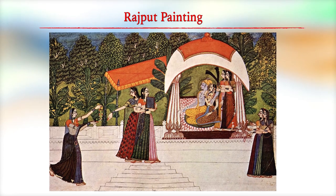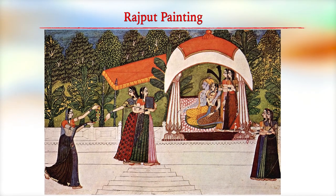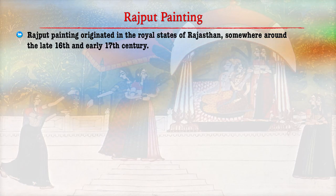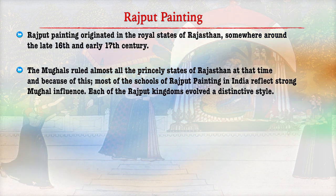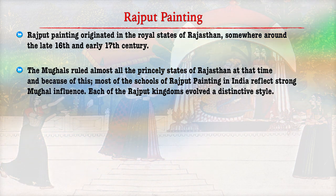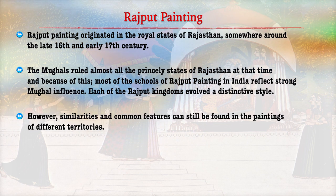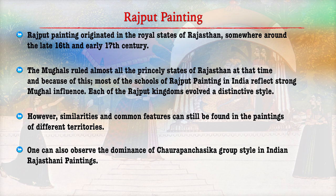Rajput painting originated in the royal state of Rajasthan around the late 16th and early 17th century. Since Mughals ruled almost all the princely states of Rajasthan at that time, Rajput painting has a strong Mughal influence. Each Rajput kingdom evolved a distinct style while sharing certain common features. The themes revolved around the great epics of Ramayana and Mahabharata, landscapes, and human and court society.